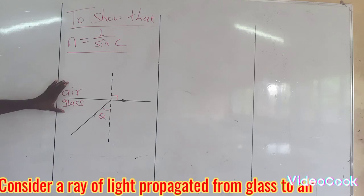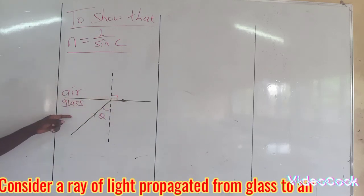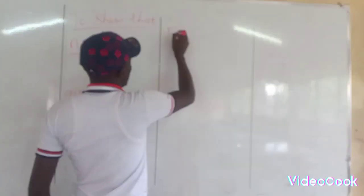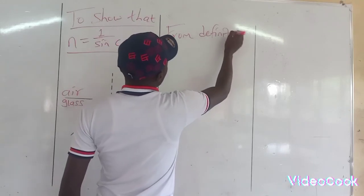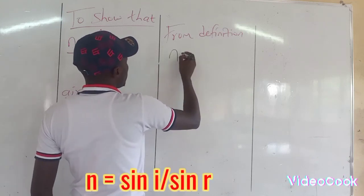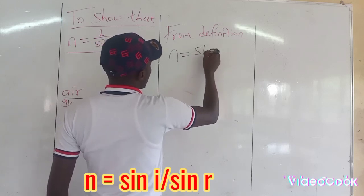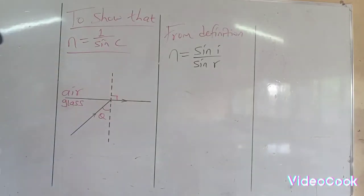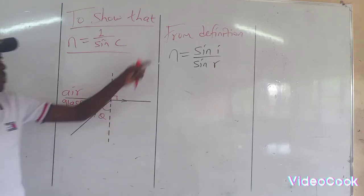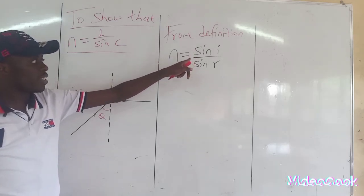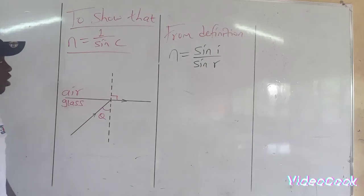We are going to consider a ray of light propagated from glass to air. From definition, we all know that refractive index is the ratio of sine of angle of incidence to the sine of angle of refraction. That is from the definition of refractive index.